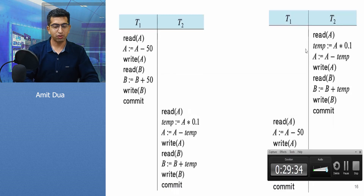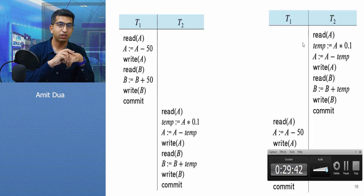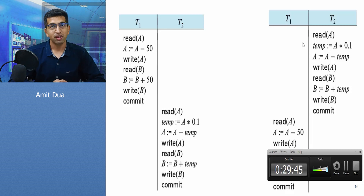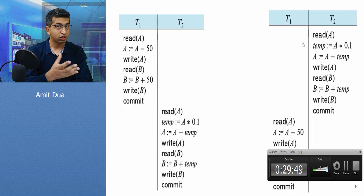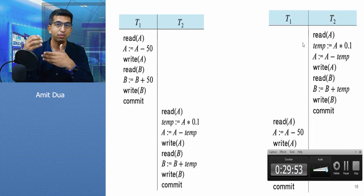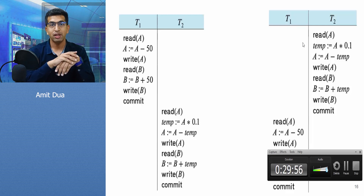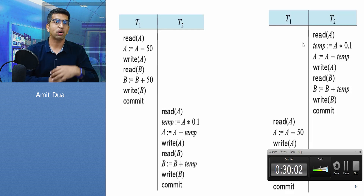Hello everyone. In this session we have discussed primarily about what is a schedule and how do we work with it. I am Dr. Amido. Till now we have discussed primarily about what is a transaction, what are the properties of transaction — ACID properties: atomicity, consistency, isolation, and usability. We also looked at why we need a transaction and what are the different states in which a transaction works.